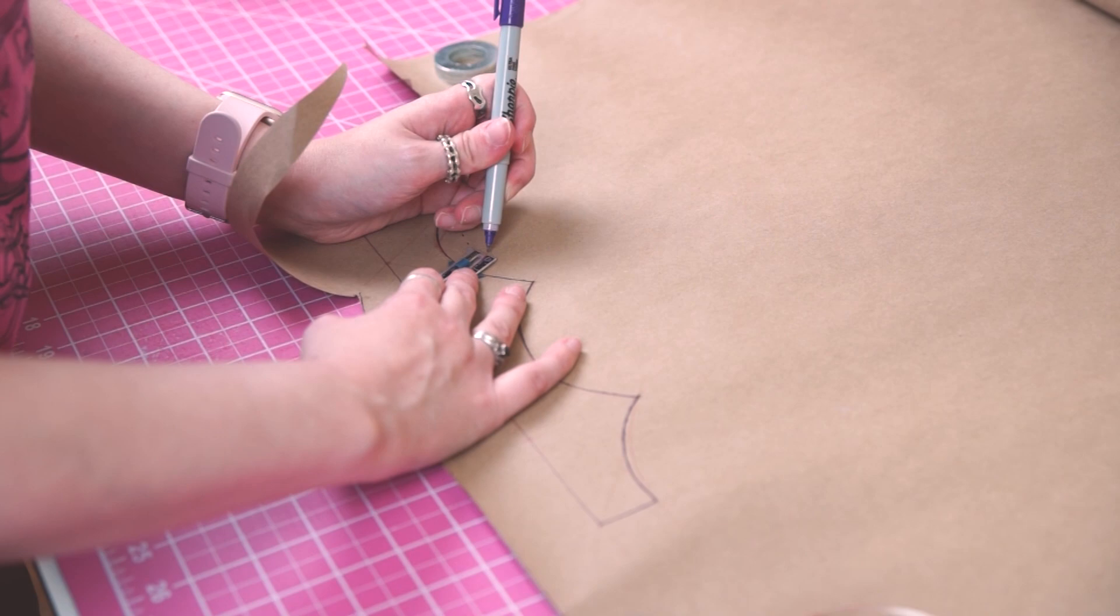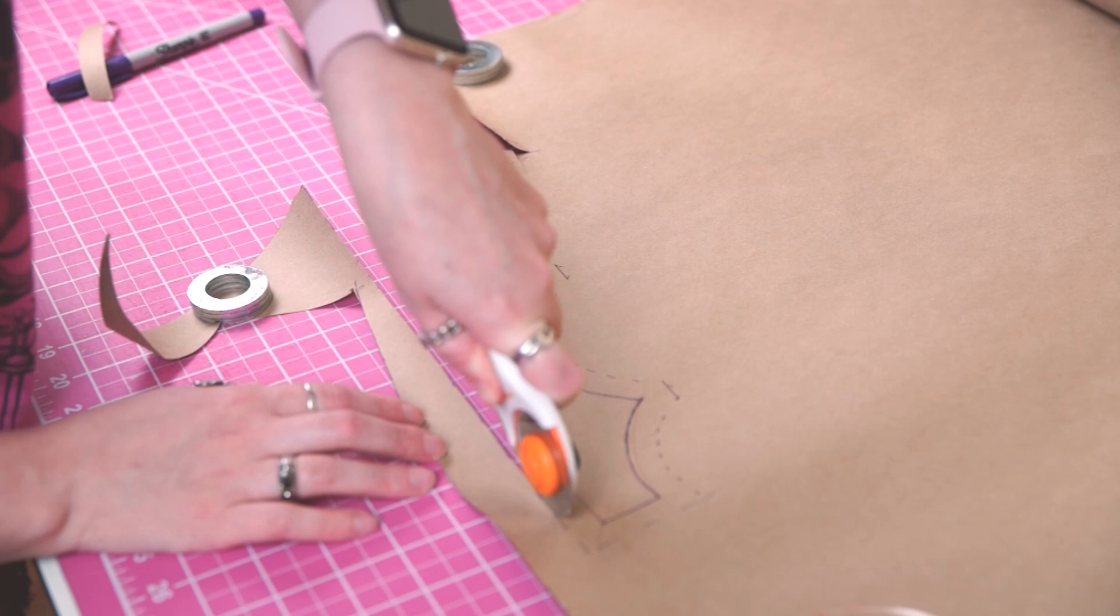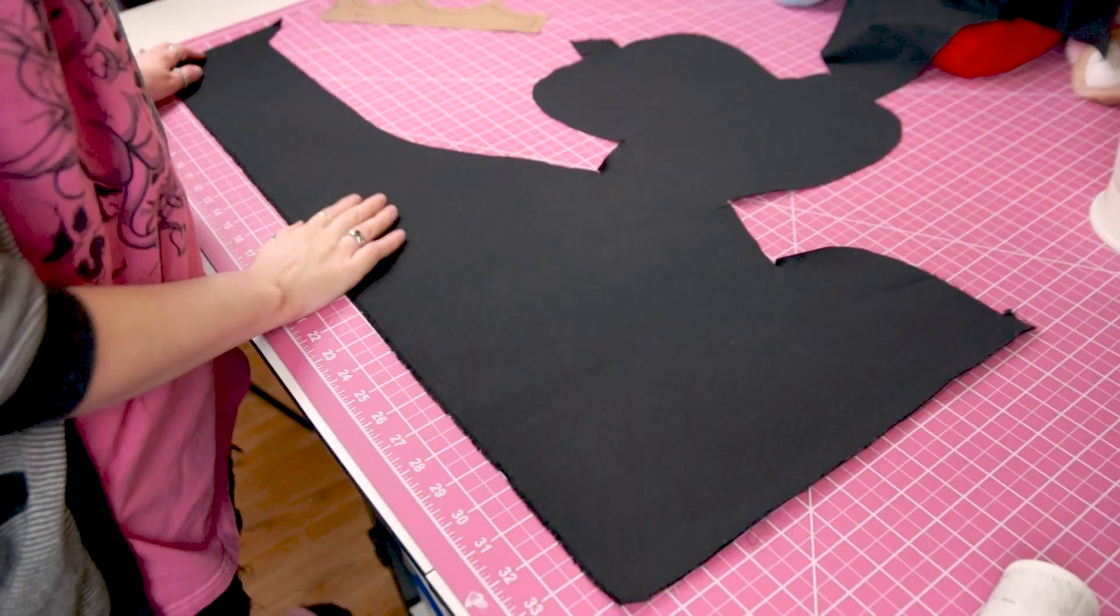But I forgot to do that. Instead I moved straight into adding seam allowance. I used half an inch of seam allowance. You can add however much is comfortable for you. Eventually most of the seam allowance will get cut off during the sewing process anyway, so it really doesn't matter how much you use.